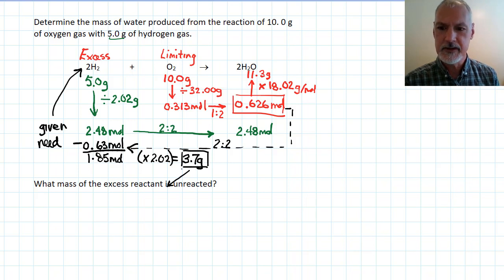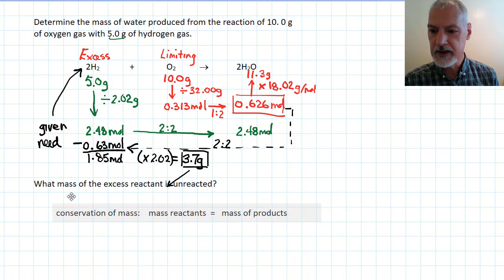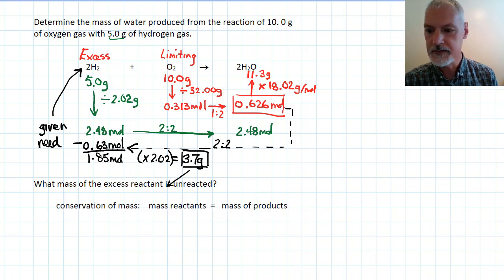But I want to show you another approach that could be used here from an idea in earlier science courses. It's called the law of conservation of mass. If I look at the mass of my reactants, the hydrogen and the oxygen together, I had 5 grams of hydrogen. I had 10 grams. So that total mass then gives me 15 grams.